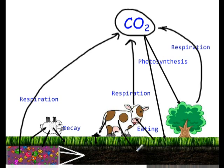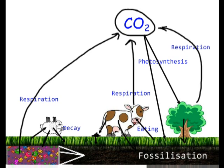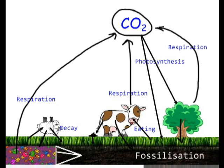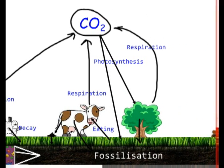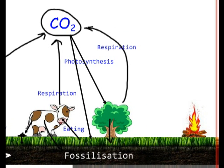In some cases, the carbon from decaying or dead animals and plants is locked underground, and this process is called fossilization. Dead animal and plant material can get locked into carbon sources underground, which become coal, natural oil, and natural gas.